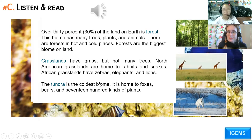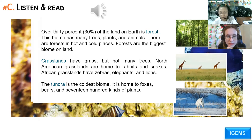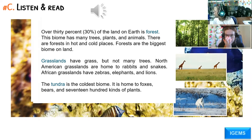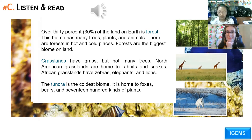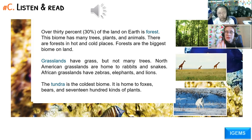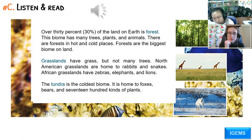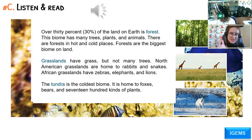Over 30% of the land on Earth is forest. This biome has many trees, plants, and animals. There are forests in hot and cold places. Forests are the biggest biome on land. Grasslands have grass but not many trees. North American grasslands are home to rabbits and snakes. African grasslands have zebras, elephants, and lions. The tundra is the coldest biome — it is home to foxes, bears, and 1,700 kinds of plants. Wow!